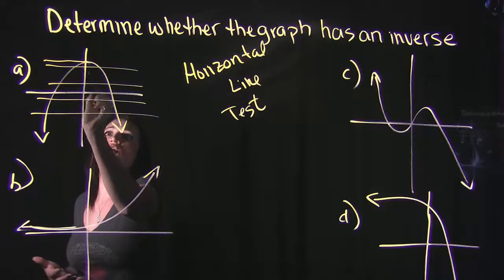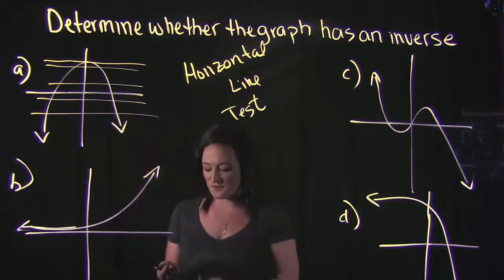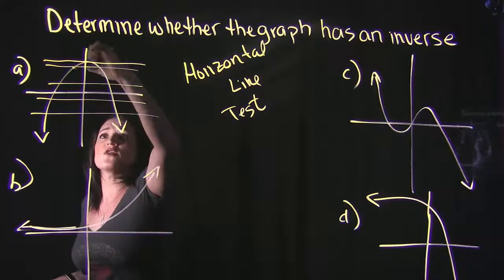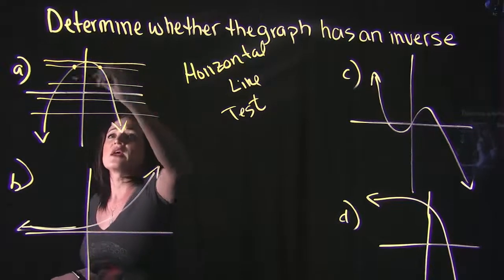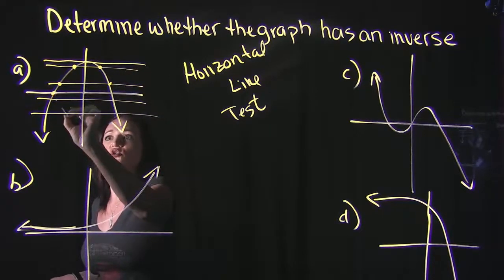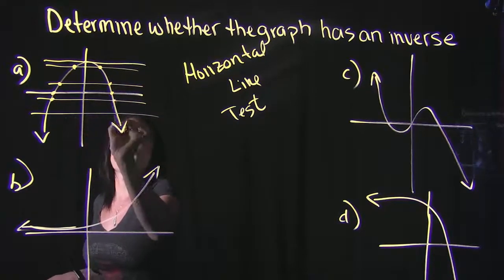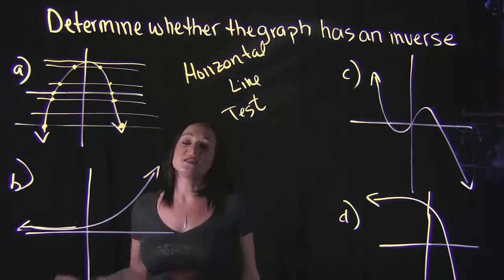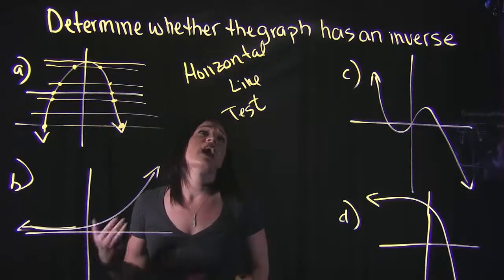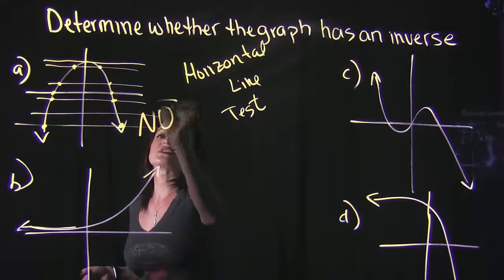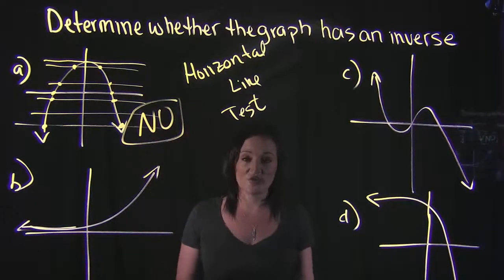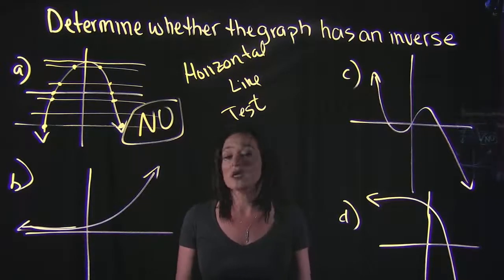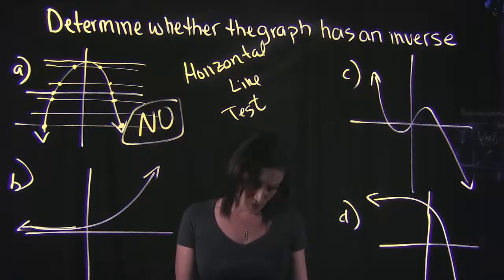Taking a look at Example A: if I drew a horizontal line right at the vertex of that graph it would only cross one time, but all these other horizontal lines I've drawn cross at two points — one, two — everywhere else it's going to cross at two points. Since it crosses more than one point, no, this does not have an inverse function. Draw a horizontal line anywhere; if it crosses once, yes — more than once, no.